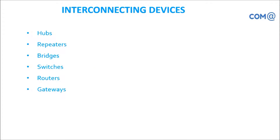Normally we have hub, repeaters, bridges, switches, routers, and gateways. These are all the common devices we use as interconnectivity devices. Some of them are very old and not used in the industry anymore, but most of these devices we are currently using in the industry.